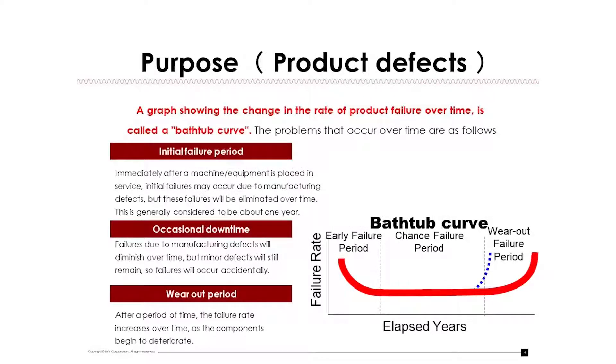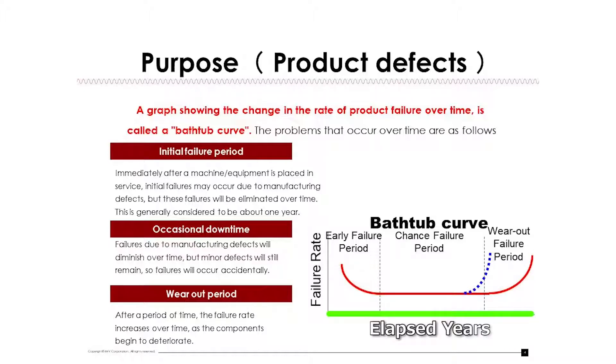The transition of a failure rate over elapsed years is indicated by such a curve, with time on the horizontal axis and the failure rate on the vertical axis. There are three defined periods: the initial failure period, the stable period, and finally the wear out failure period due to fatigue. The red line is called a bathtub curve, as it mirrors the shape of a bathtub.